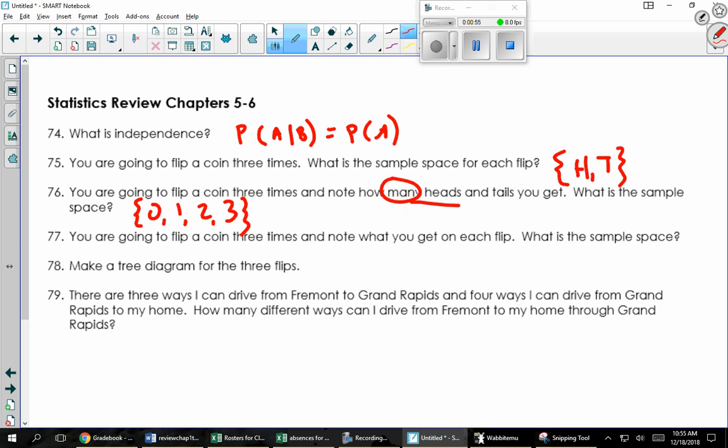The next one says we're going to note what we get on each flip. What's the sample space? Heads, heads, heads. Heads, heads, tails. Heads, tails, heads. Tails, heads, heads. Heads, tails, tails. Tails, heads, tails. Tails, tails, heads. And tails, tails, tails. There would be eight things in that sample space because 2 times 2 times 2 is 8.